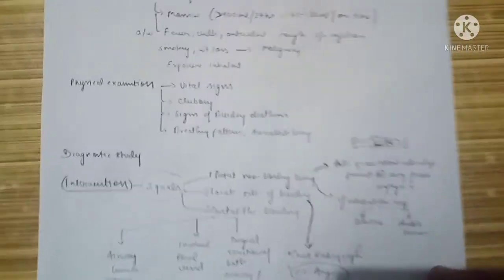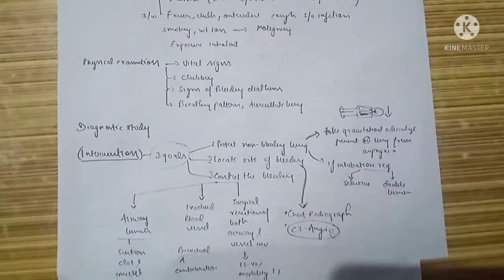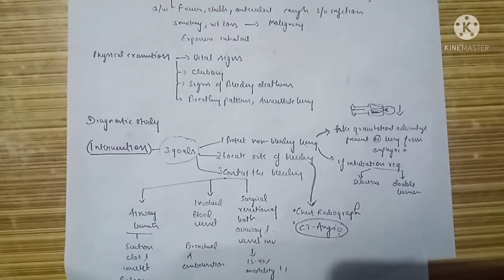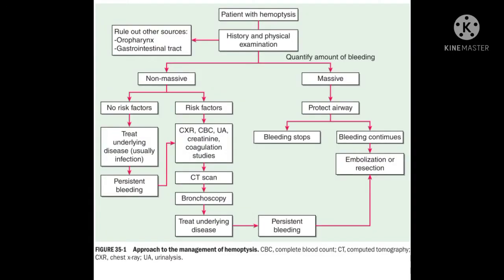For the algorithm, refer to this chart from Harrison's. A patient presenting with hemoptysis undergoes history and physical examination. Epistaxis and upper GI bleed are ruled out, and the amount of bleeding is quantified — classified as either non-massive or massive.